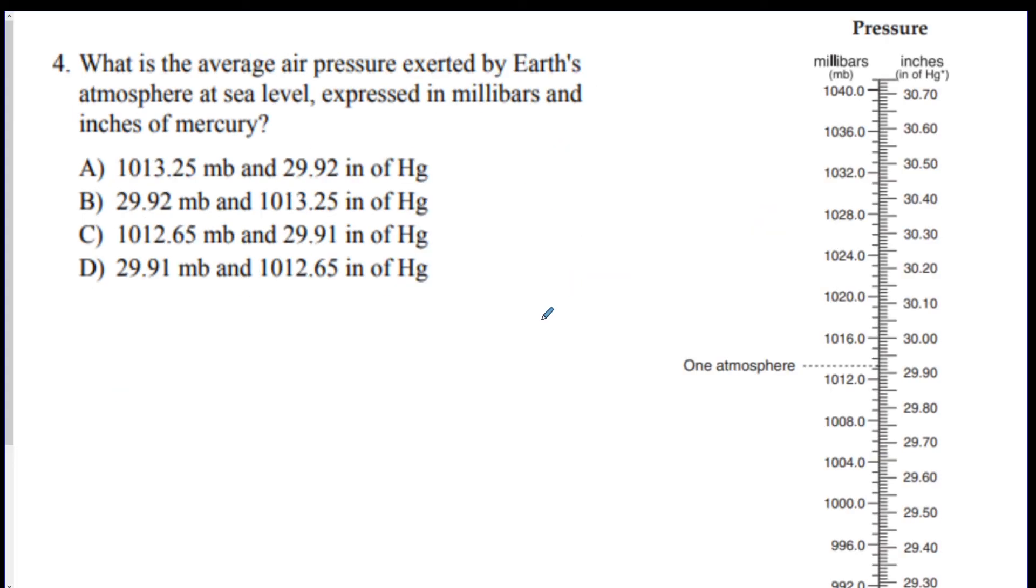Number four. Pressure exerted by the Earth's atmosphere at sea level expressed in millibars and inches of mercury. So we said one atmosphere at sea level. 1,013.2 millibars, which is 29.92 inches of mercury. Looks like A is the best answer.